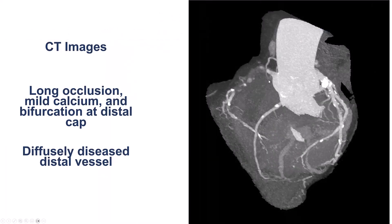This is the coronary CT angiogram showing the blunt proximal cap. There is some calcification but not much within the occluded segment. This is a long occlusion and the distal cap is at the bifurcation of the distal RCA and the acute marginal branch.